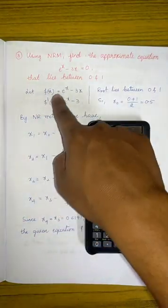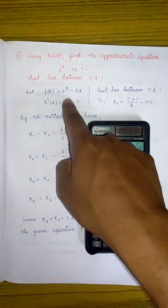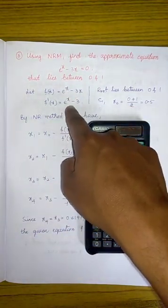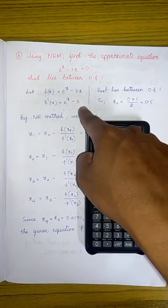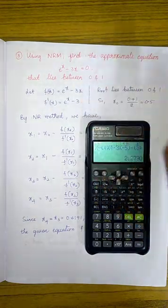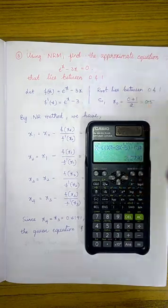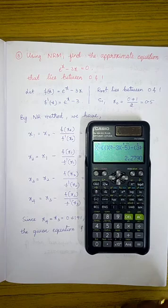So here let us write f(x) as e^x minus 3x, and f'(x) is the differentiation, which is e^x minus 3. Here, one more thing is given: the root lies between 0 and 1. So let us consider the initial guess as the average of these two numbers, so 0 plus 1 by 2, that is 0.5.